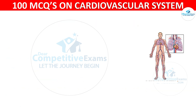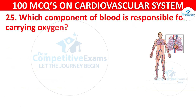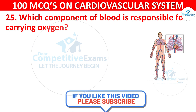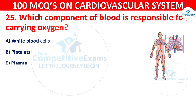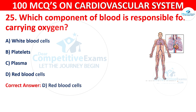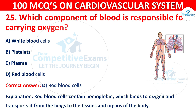Q25. Which component of blood is responsible for carrying oxygen? Options are: white blood cells, platelets, plasma, or red blood cells. The correct answer is D — red blood cells. Red blood cells contain hemoglobin, which binds to oxygen and transports it from the lungs to the tissues and organs of the body.